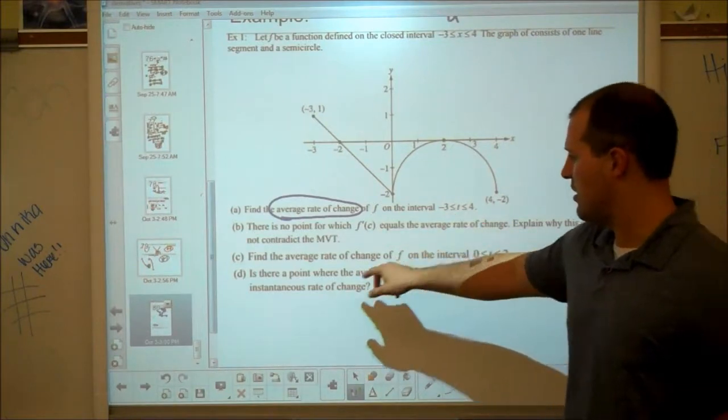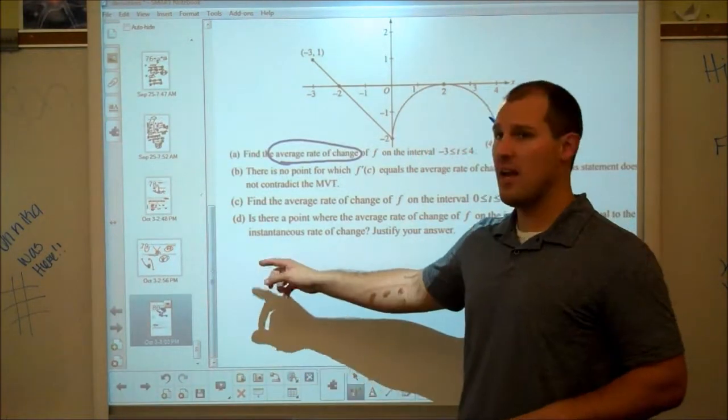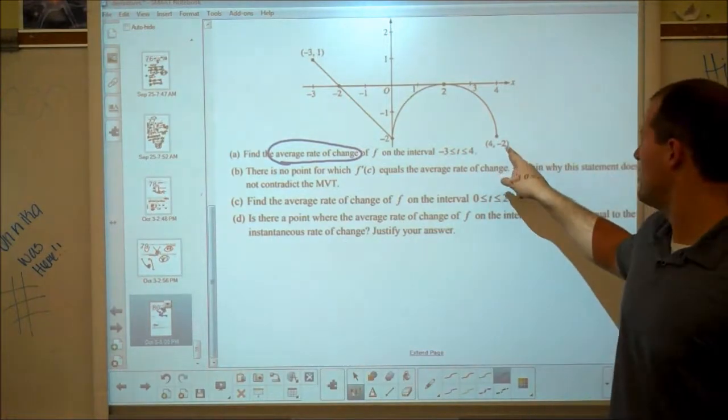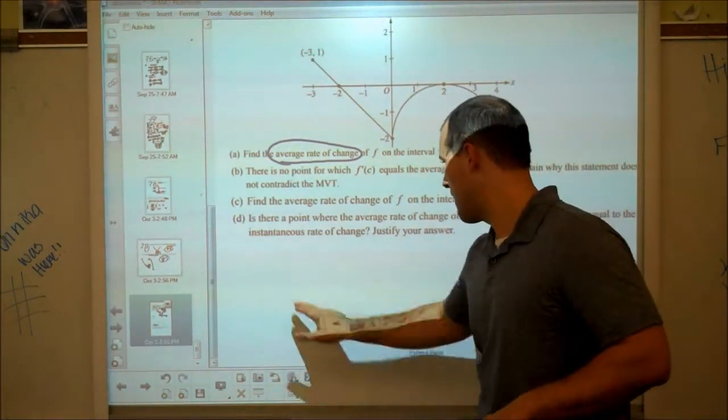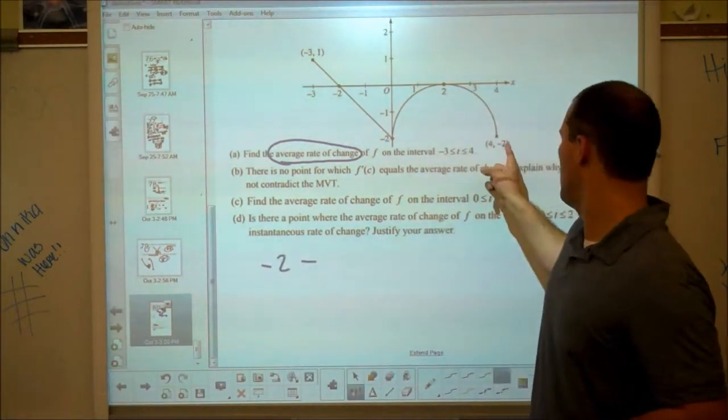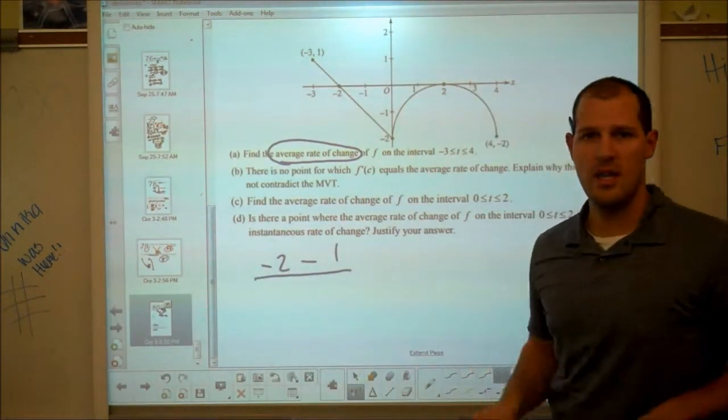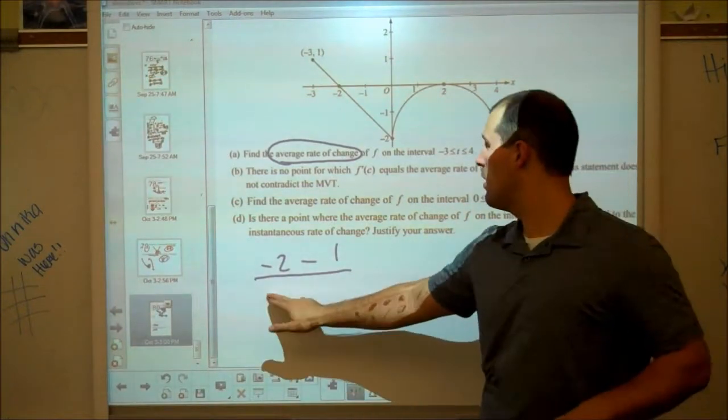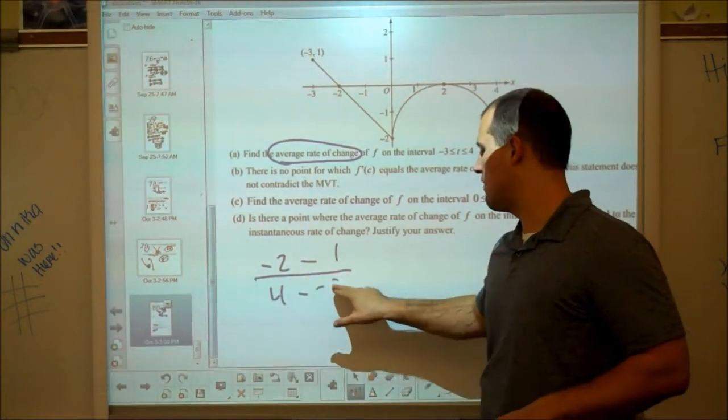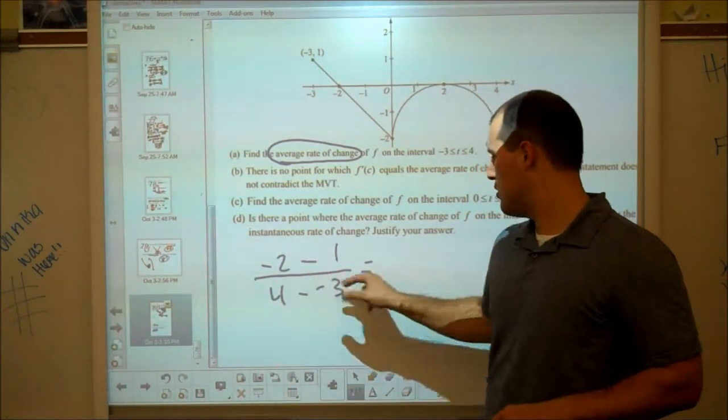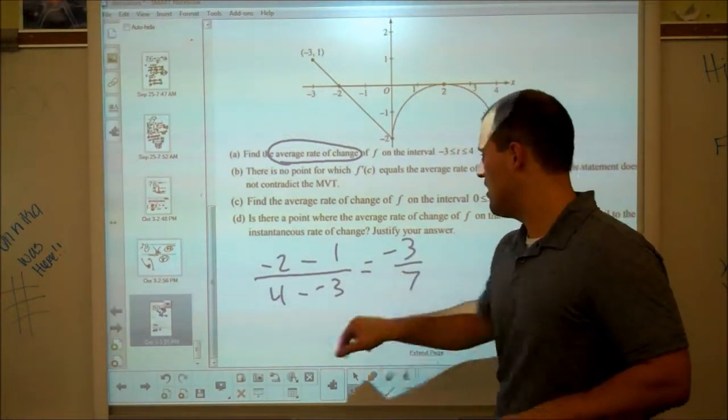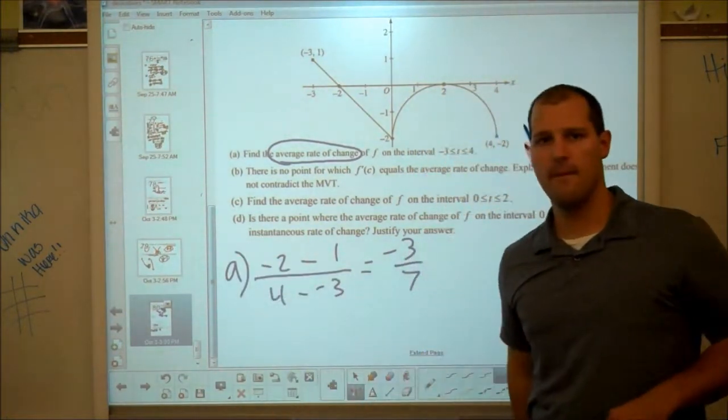Average rate of change of this is just the slope. And so, that looked like f of b. f of b was a y value. I'm going to use negative 2. Minus the y value of the other end point. That's 1. And then it was b minus a in the definition. So that's 4 minus negative 3. Simplify that out. You've got negative 3 over 7. That's part a. We're done. Let's go on to part b.